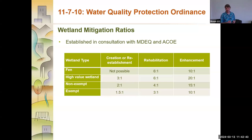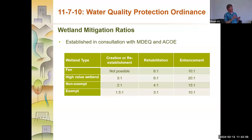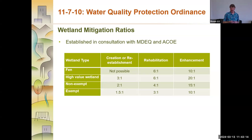I've only seen a few instances where these have actually been applied, and they've all been in the creation or reestablishment category. We haven't seen any applications come in regarding fens. When I was reviewing this slide last week with a fellow colleague who is a wetland specialist, she made the same point that those rehab and enhancement ratios do look really high. If this group has any recommendations that I can bring back to the city, by all means — we're certainly open to looking at these in more detail.